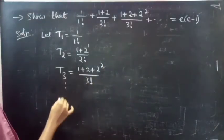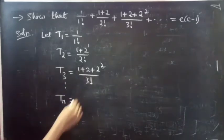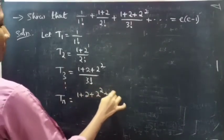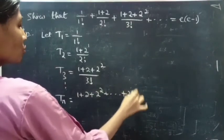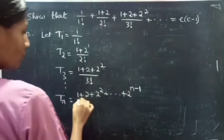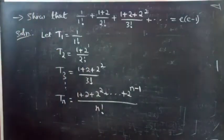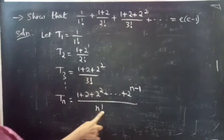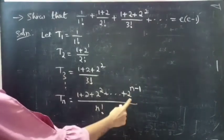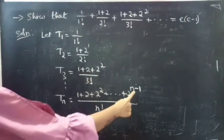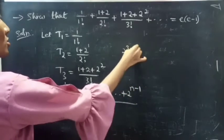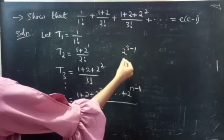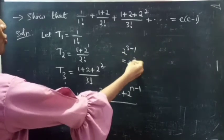Likewise we can write for the nth term: 1 plus 2 plus 2 squared plus ... plus 2 power n minus 1, all by n factorial. If you substitute n equals to 3, you will get 3 factorial and the last term will be 2 power 3 minus 1, which equals to 2 squared.